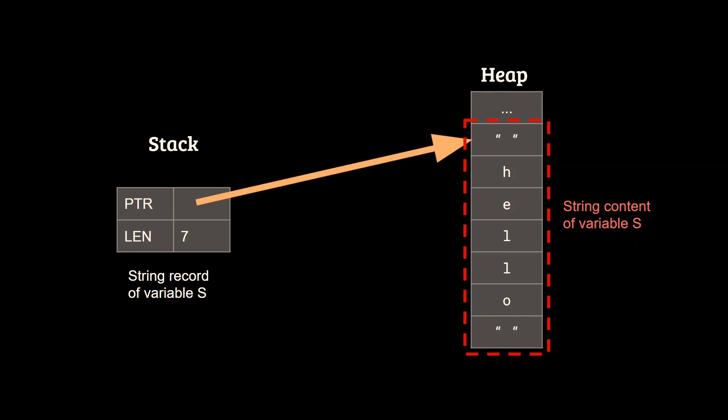Looking at our example, we can say that s does not contain the actual string content, but instead it is simply a reference to the memory region containing the content. And this is in contrast with other basic data types such as integers, for which their value is usually stored on the stack due to them having a fixed size.